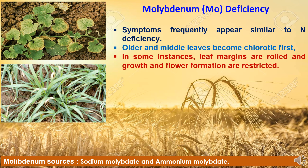Deficiency symptoms of molybdenum frequently appear similar to nitrogen deficiency. Older and middle leaves become chlorotic first, and in some instances, leaf margins are rolled and growth and flower formation are restricted. To overcome molybdenum deficiency, sources available include sodium molybdate and ammonium molybdate.